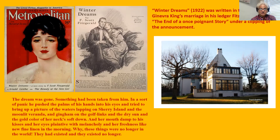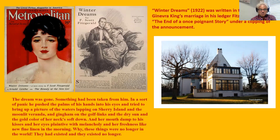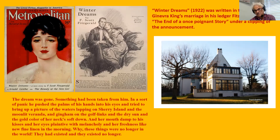I think what Fitzgerald is dramatizing is less really about Judy Jones than about Dexter Green's illusions and his youth. The story ends with a really beautiful passage: 'The dream was gone. Something had been taken from him. In a sort of panic he pushed the palms of his hands into his eyes and tried to bring up a picture of the waters lapping on Sherry Island and the moonlit veranda and the gingham of the golf links... We do not write like that anymore. But these things were no longer in the world — they had existed and they existed no longer.'